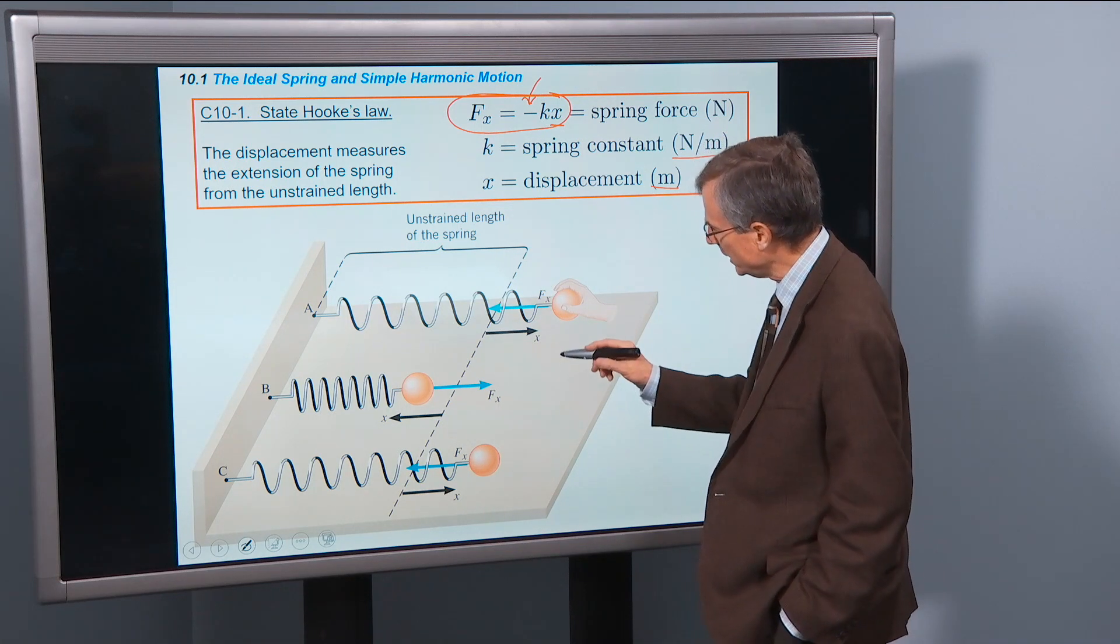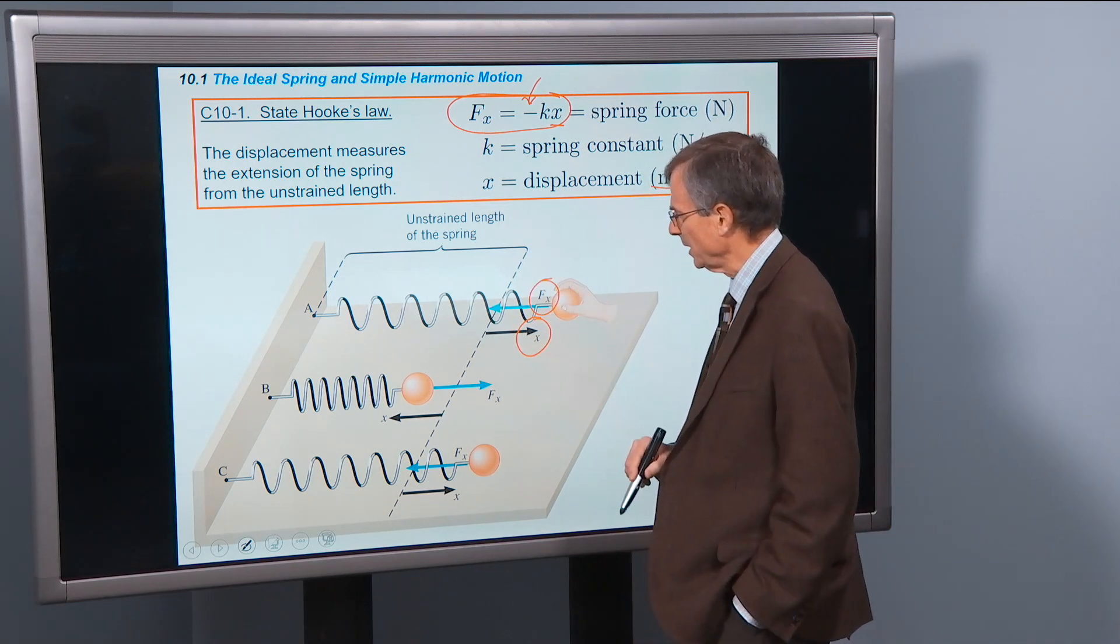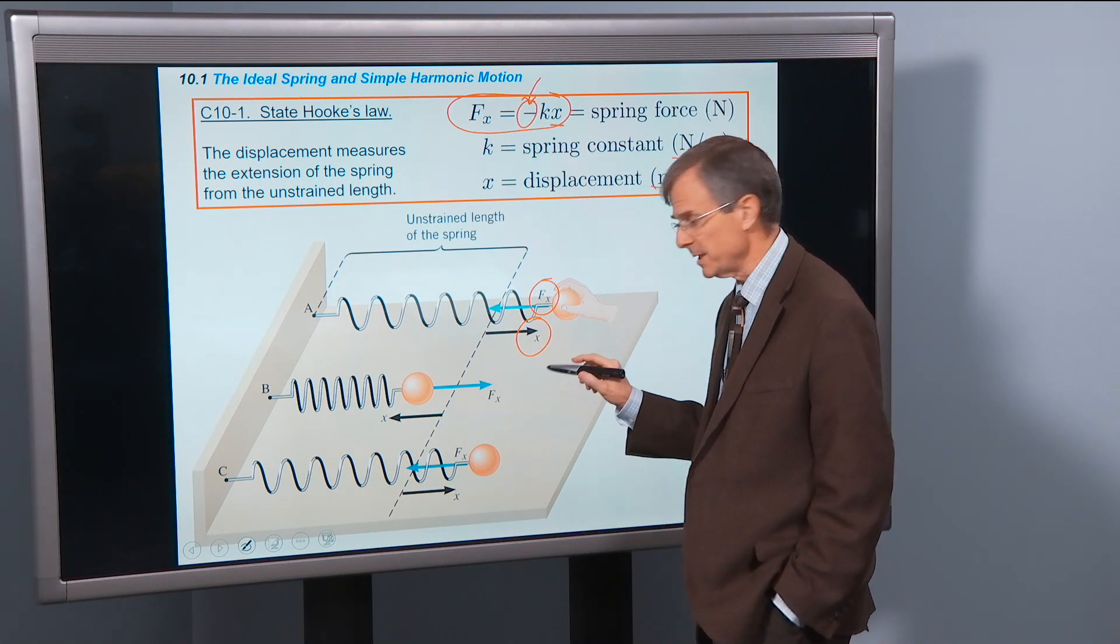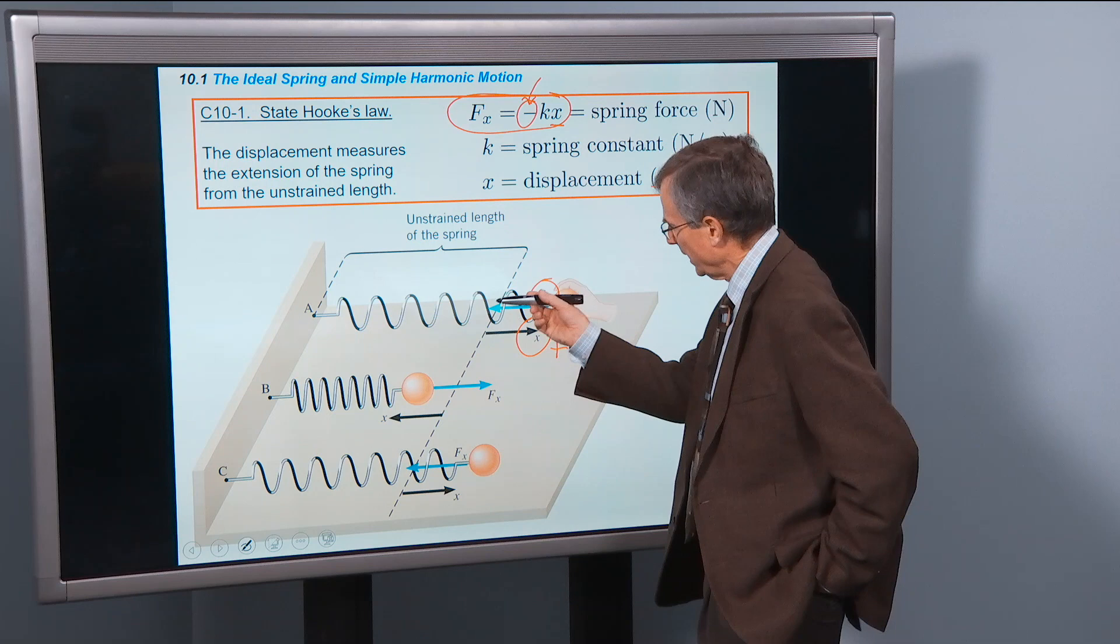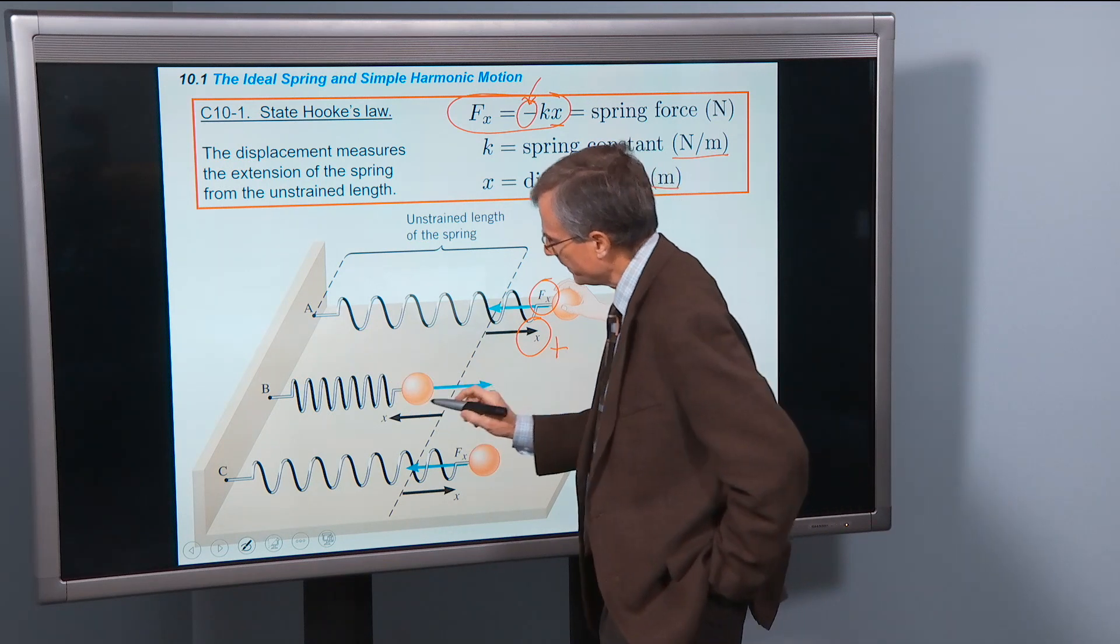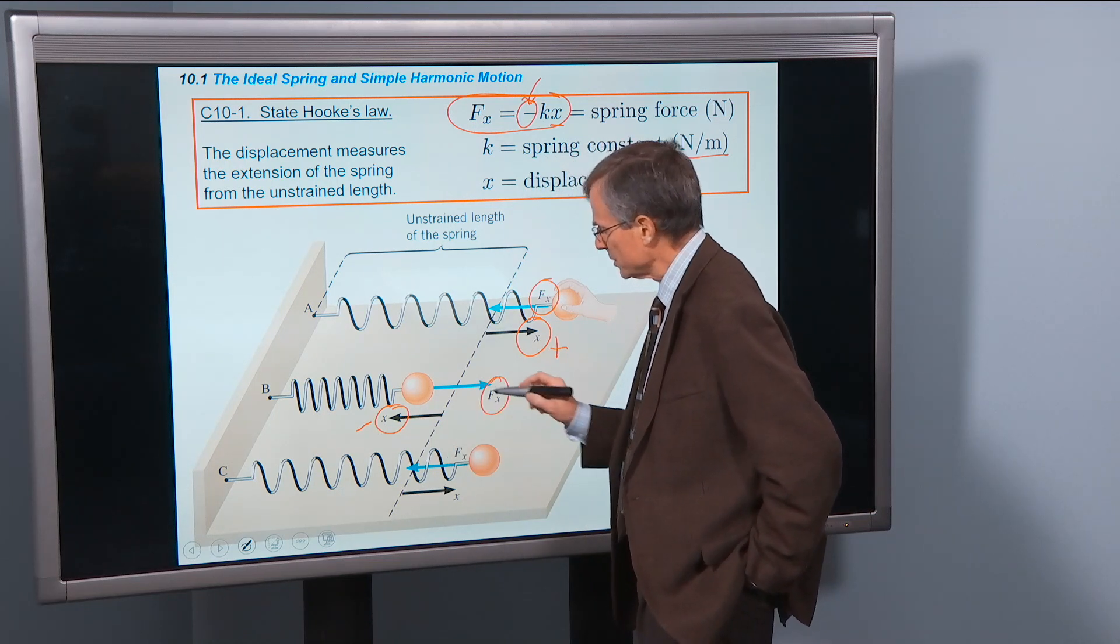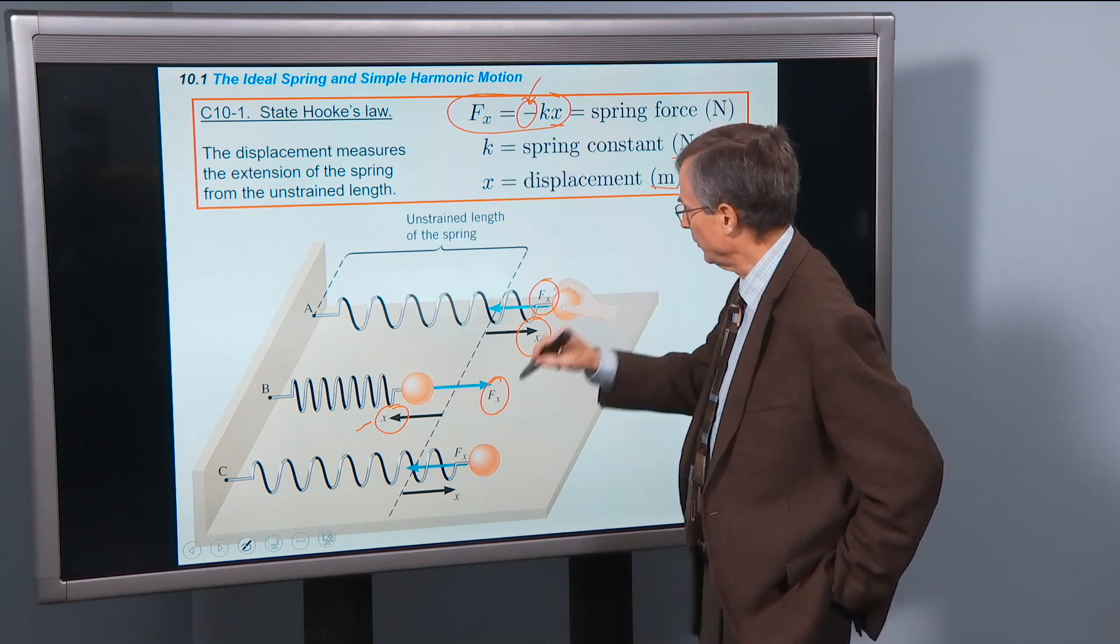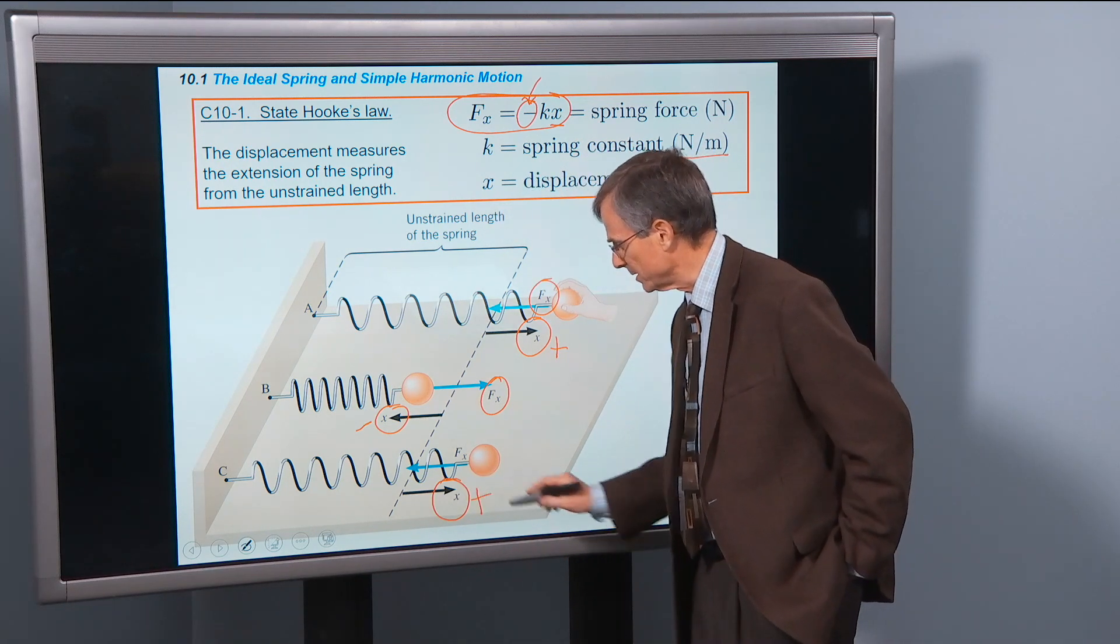And so just noting here in this figure that if the displacement is to the right, the force is to the left. That's this minus sign. And this is a positive displacement. That displacement to the right, x will be a positive number. And F will therefore be a negative number. Or if you compress the spring, then x will be to the left, it'll be negative. And the force will be to the right. Because you've got a negative sign here and a negative x. And that'll give you a force that's in the plus x direction.